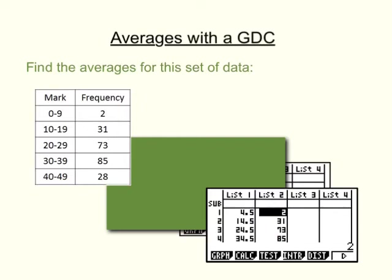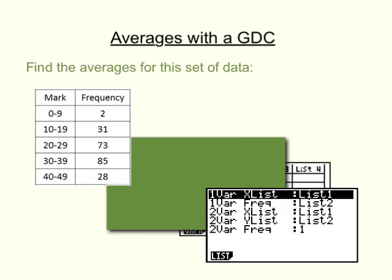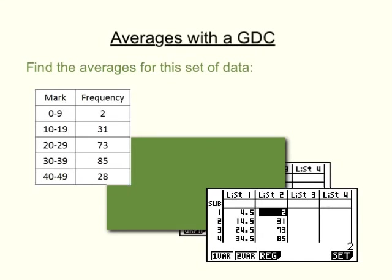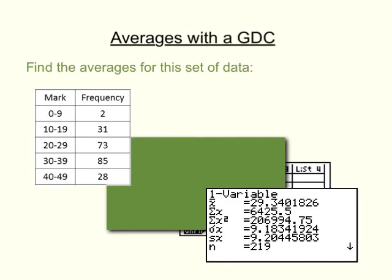We then put the frequencies in list 2. Again, we hit Calc and that reveals the options. We go to Set to make sure we're set up correctly. Just like with the other frequency table, the xList must be list 1 — where we typed the midpoints — and the frequency must be list 2, where we put those frequencies. Once set up, we go back to the previous screen and hit one var for one variable analysis. We have to remember that if we're dealing with grouped data, these values will only be estimates because we've used the midpoints instead of the actual values.